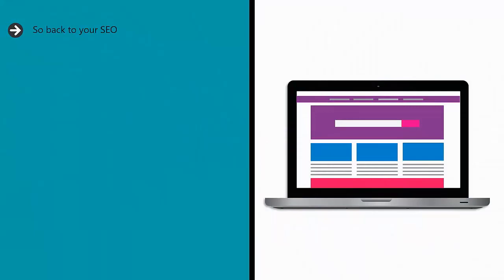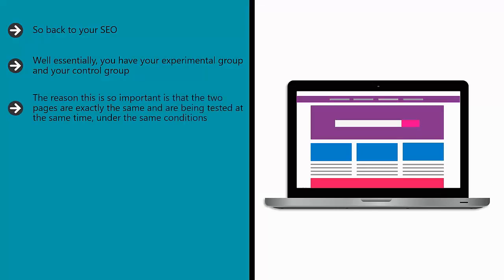So back to your SEO — what does all this have to do with split testing? Well, essentially you have your experimental group and your control group. The experimental group is the one where you have introduced a new header or whatever else, and the control group is the one where you have left everything as it was. The reason this is so important is that the two pages are exactly the same and are being tested at the same time under the same conditions.